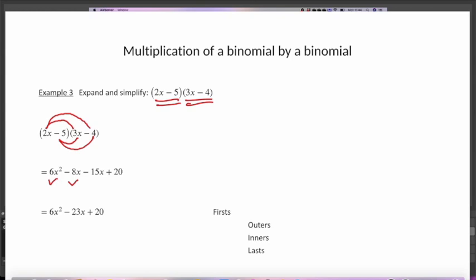If you've drawn the curves nicely, you'll see the shape of a crescent moon. So (-5) × 3x = -15x, and (-5) × (-4) = +20. Are there any like terms? Yes — -8x and -15x are like terms. We simplify those to get -23x. So the final answer is 6x² - 23x + 20.